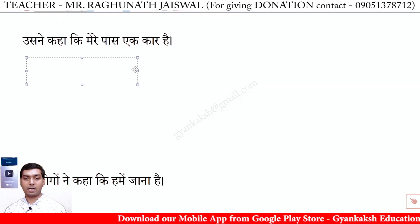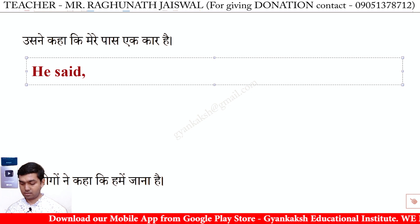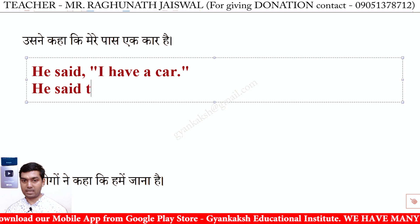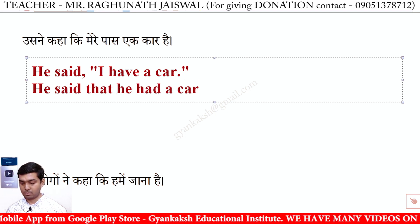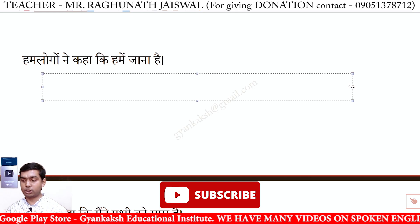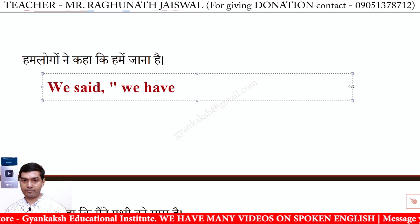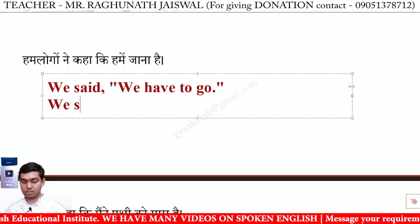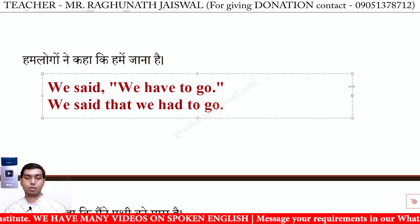Us ne kaha ki mere paas ek car hai. Direct: He said, 'I have a car.' Indirect: He said that he had a car. Hum logo ne kaha ki hume jana hai. Direct: We said, 'We have to go.' Indirect: We said that we had to go.